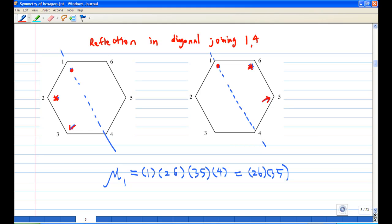So using this, we know that 1 goes to 1, 2 goes to 6 and 6 goes to 2, 3 goes to 5 and 5 goes to 3, and 4 stays put. So you have (2 6)(3 5). We call this μ₁.